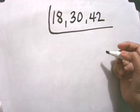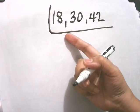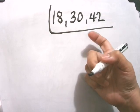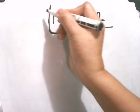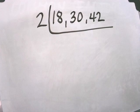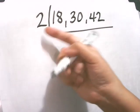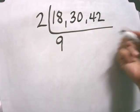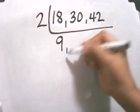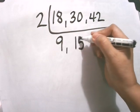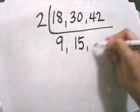So what is the prime number that is a factor of these numbers? We will start with 2. 18 divided by 2 equals 9, 30 divided by 2 equals 15, 42 divided by 2 equals 21.